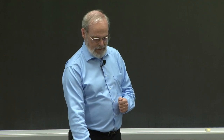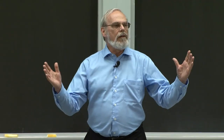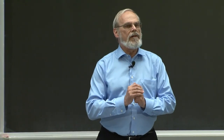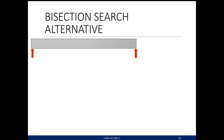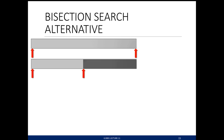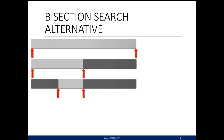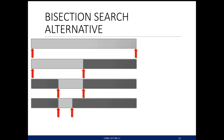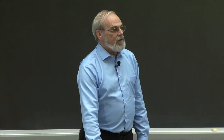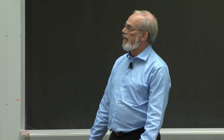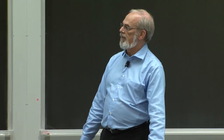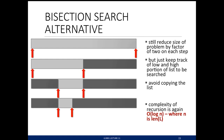Can we fix this? Yes. Instead of copying the list, keep track of the beginning and end indices — two pointers. When I test the middle, move one pointer to the middle. I'm not copying the list; I'm just keeping track of which portion bounds my search. I still reduce the problem size by a factor of two at each step, but the cost per call is now constant. The number of recursive calls is still logarithmic.